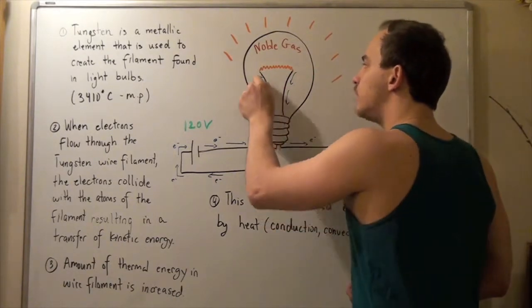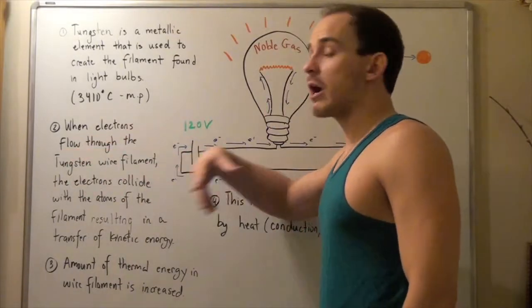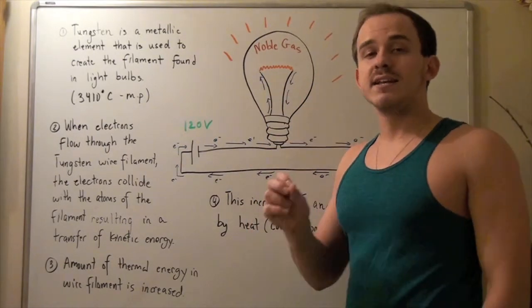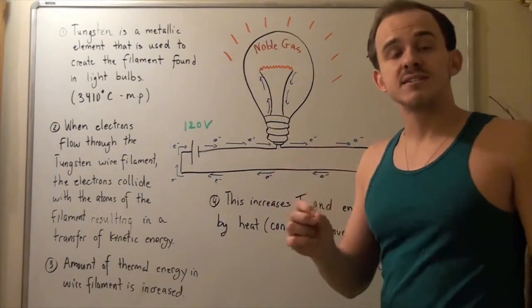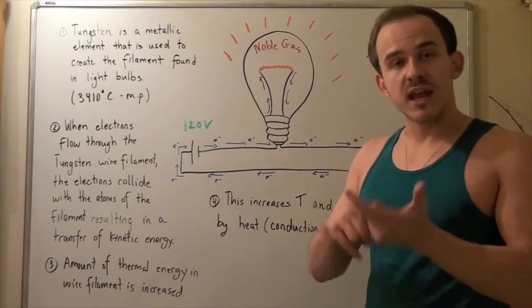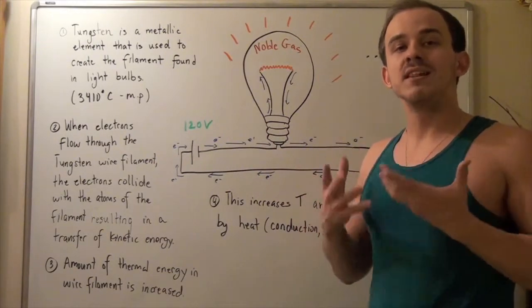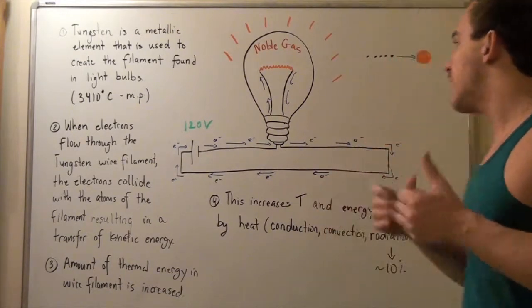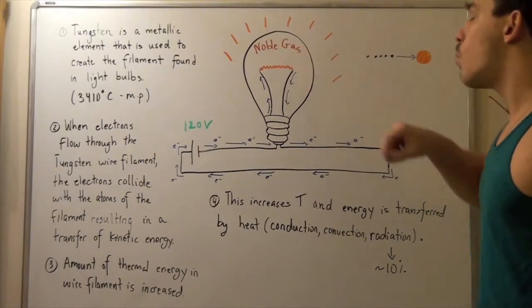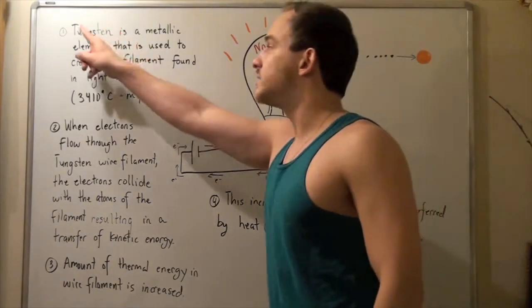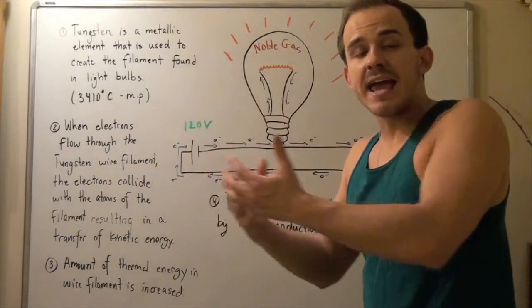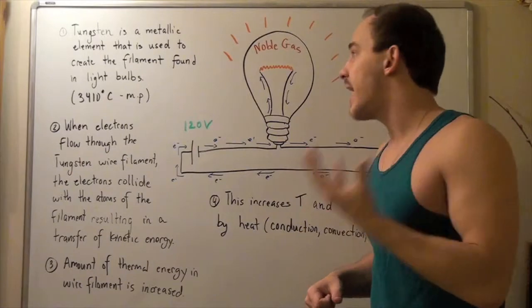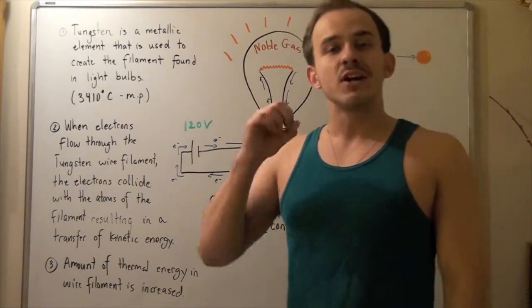When electrons flow through our filament — our tungsten, in the usual case — the filament gains energy. Electrons moving have velocity, so they have mass and velocity, which means they have kinetic energy. When electrons flow through our wire filament, through our tungsten, they carry kinetic energy with them. Some of these electrons collide with the tungsten atoms, transferring kinetic energy or thermal energy to those atoms. On average, our filament increases its kinetic energy, and kinetic energy is directly related to temperature.